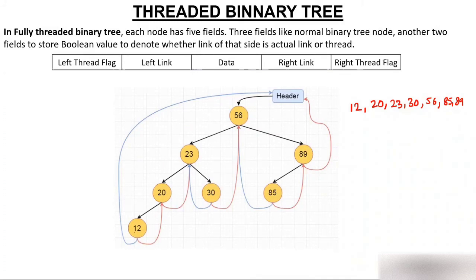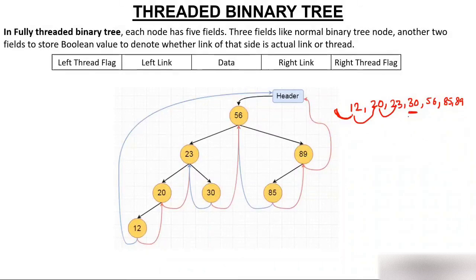Node 12 is a leaf node with both pointers free. From the left, there is no predecessor, so it keeps the information of the header; from the right, it keeps the information of 20. Node 20's left is already occupied, so only the right keeps the information of 23. Node 30 has both pointers free — from the left it keeps 23, from the right it keeps 56. Similarly, nodes 85 and 89 follow the same logic. This is fully threaded binary tree.